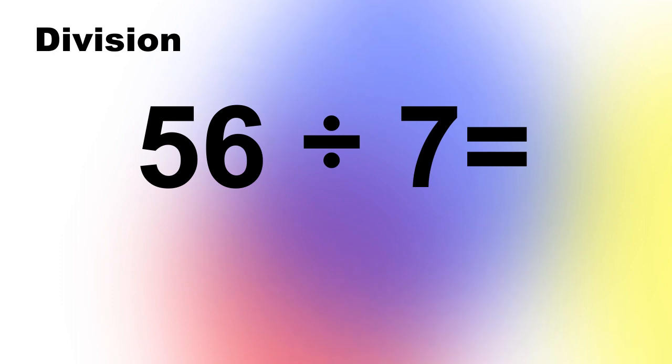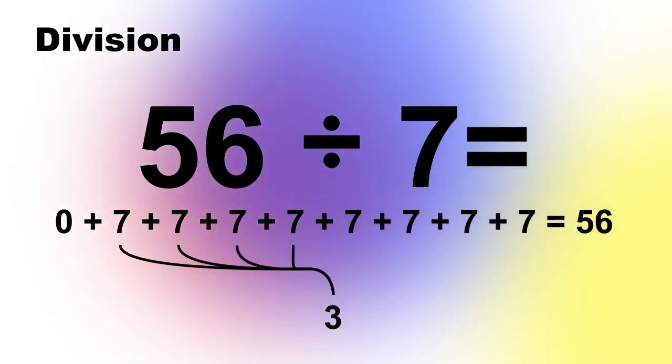So to divide 56 by 7, we do 0 plus 7 plus 7 plus 7 and count the 7s until we get 56. In this case, there are 8 7s.